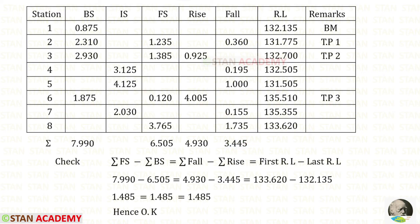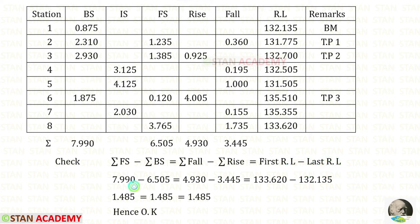Now we have to apply the check. The difference between the summation of foresight and summation of back sight should equal the difference between summation of fall and summation of rise, which should also equal the difference between the first and last reduced level. When we calculate all three, we get the same value — hence, the check is satisfied.